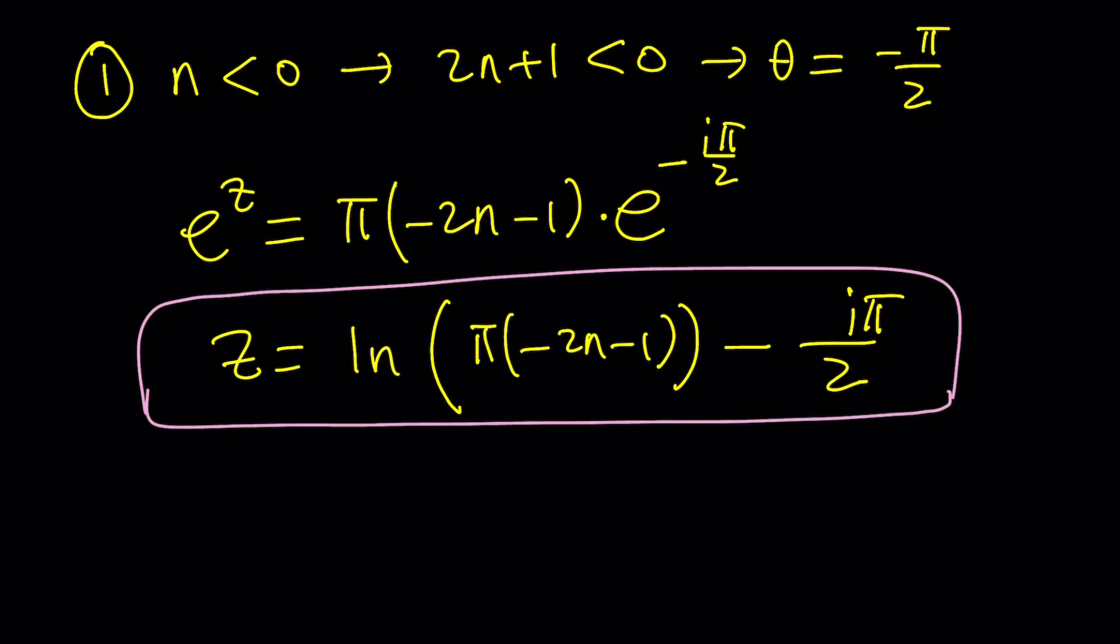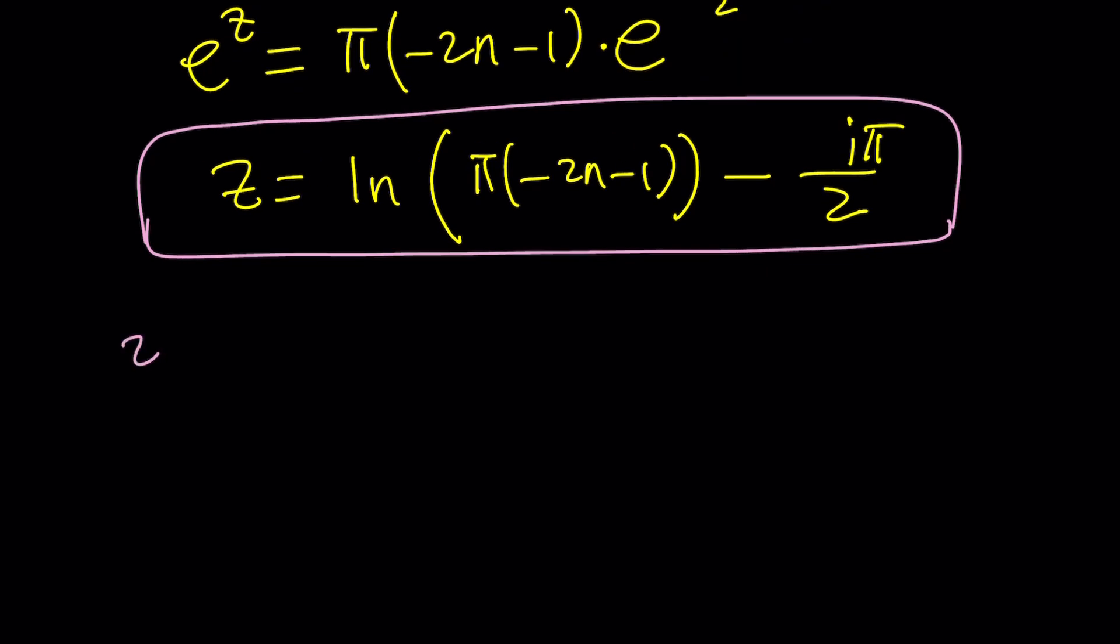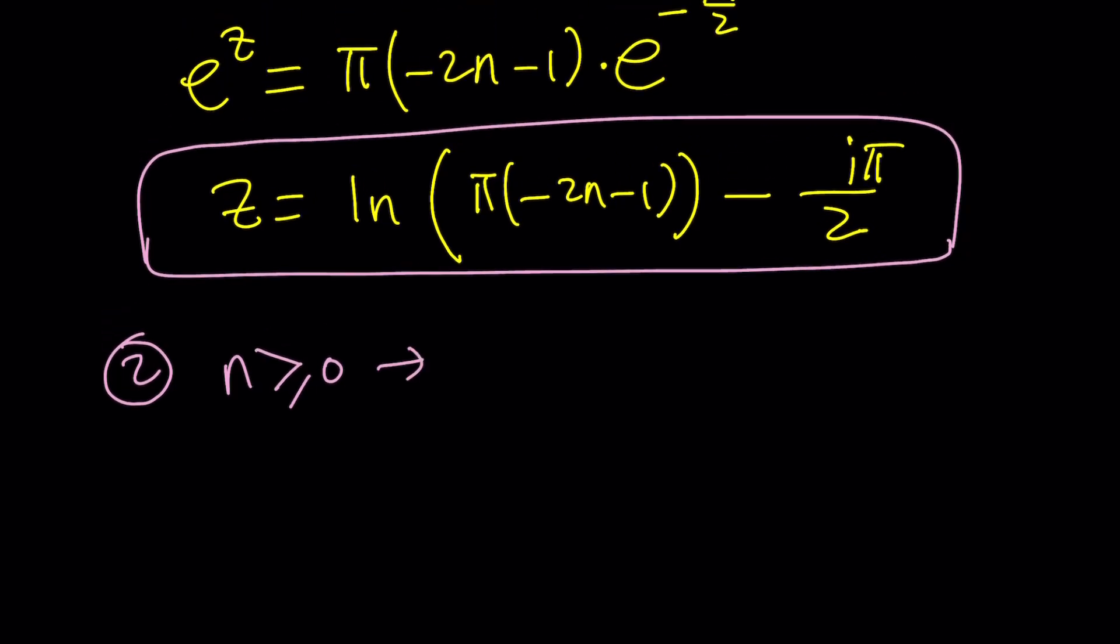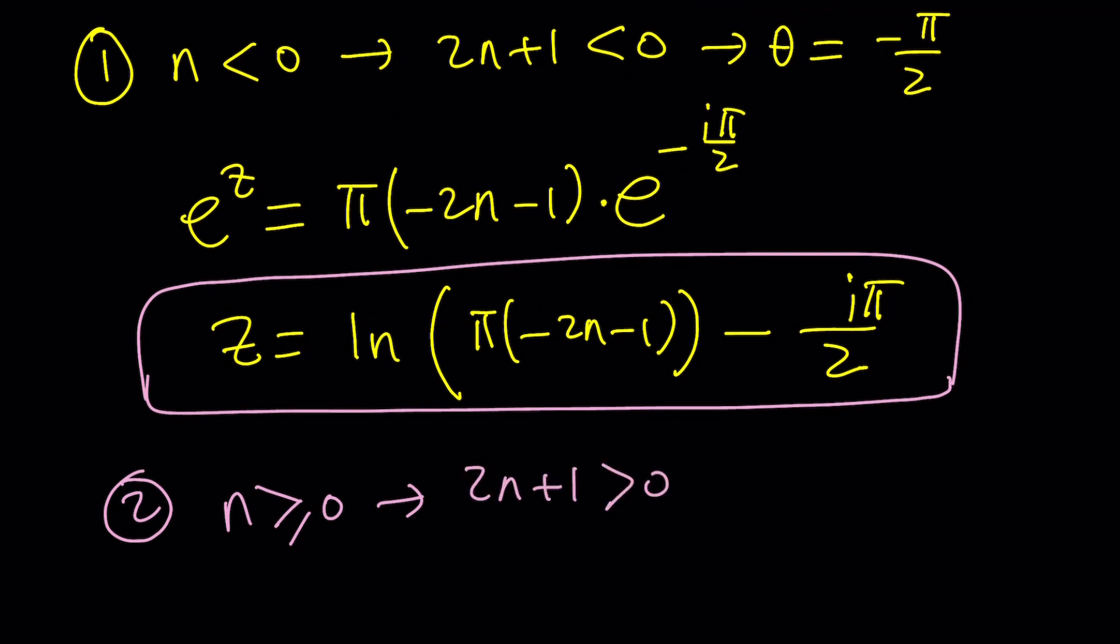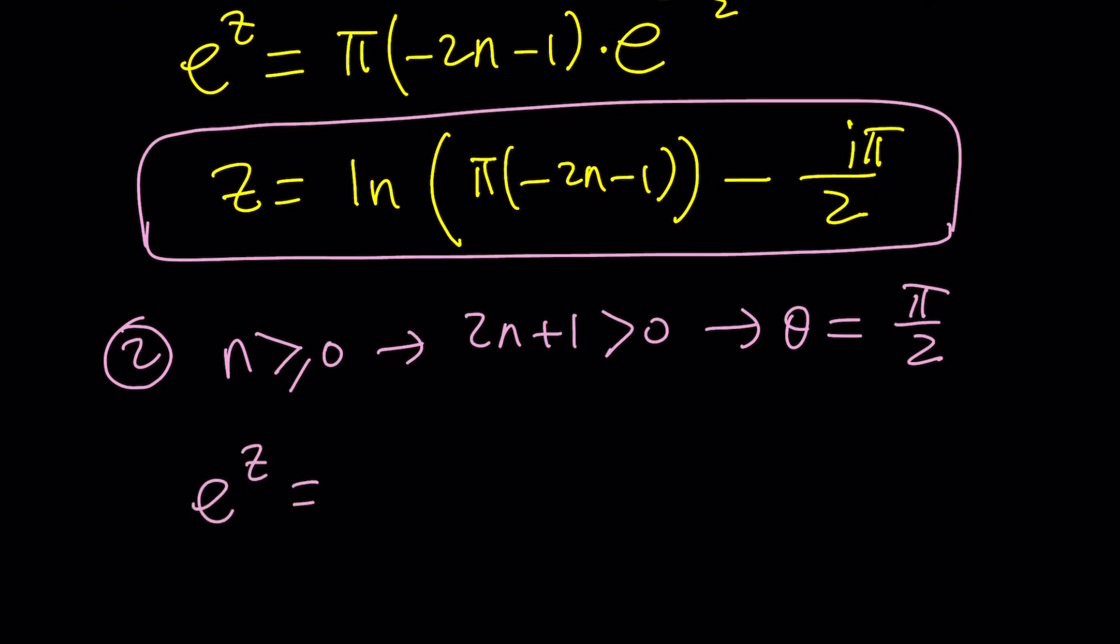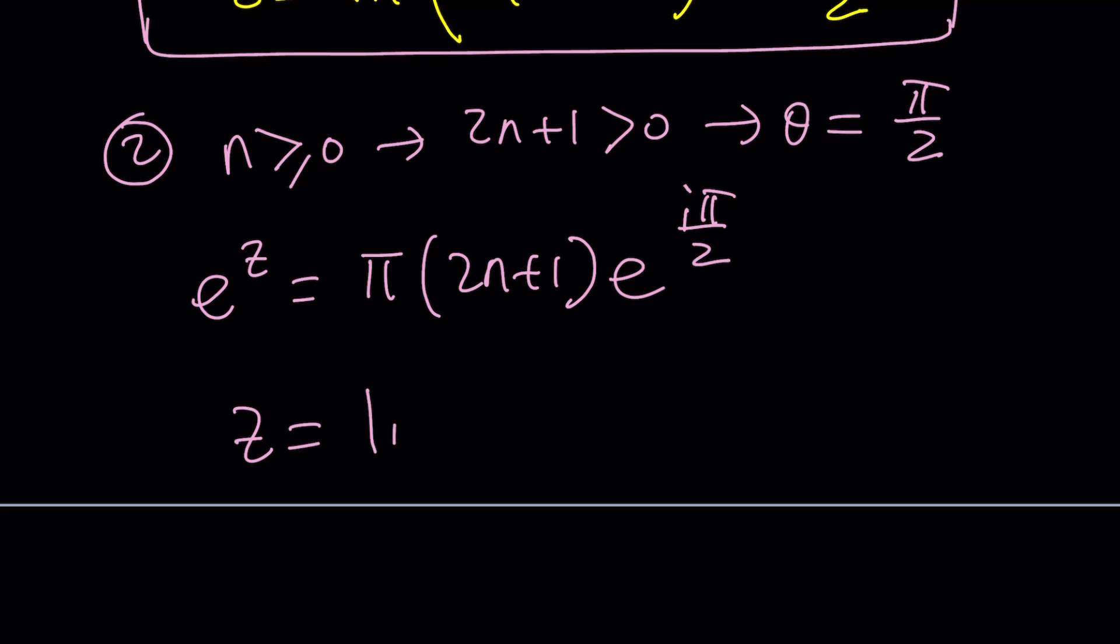For the second case scenario, if N is greater than or equal to zero, because if N is zero, we're going to get a positive multiple of I. In this case, we're going to get two N plus one is going to be positive. So, our theta is going to be pi over two on the imaginary axis. And e to the z can be written the same way, basically, without changing anything. And from here, z can be written as LN of pi times two N plus one plus I times pi over two. That's going to be the other case. There are basically two different types of solutions.